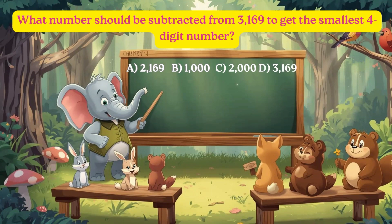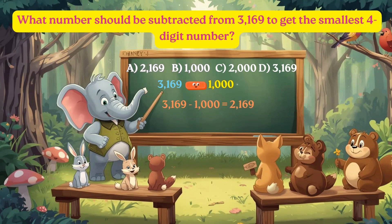Let's do it. Do you know which is the smallest 4-digit number? Yes, it is 1,000. Here we start with 3,169 and want to end up with 1,000 — we just take away the extra blocks. To find the extra, we subtract. So, 3,169 minus 1,000 leaves us with 2,169. That means we need to take away 2,169 blocks to get to 1,000. So the answer is Option A, 2,169. Easy peasy, right? You nailed it.